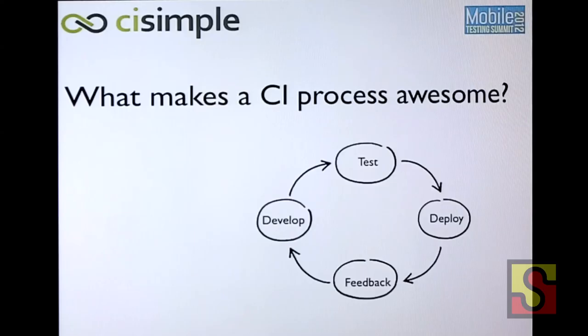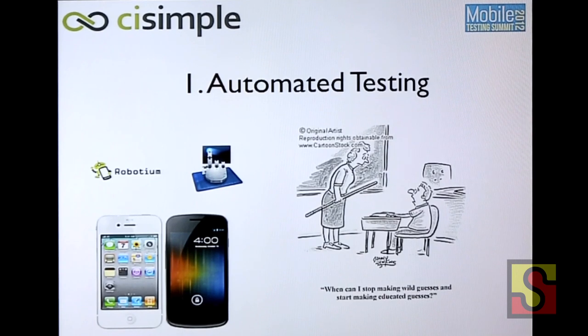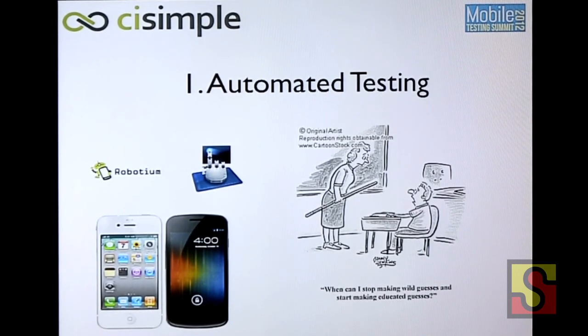Which is a terrible state because continuous integration is pretty awesome. It's a great thing to have. Why is continuous integration awesome? First of all, it can automate your testing. We're at the Mobile Testing Summit, so most of you probably know why automated tests are really good. Basically, every time you commit, you'd really like for all of your tests to be run — all of your unit tests, your UI automation tests, even running tests on physical devices. This should all be automated.